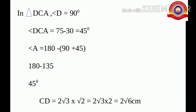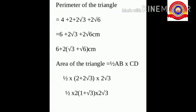Since two angles of triangle DCA are equal, the sides opposite to these angles are also equal. Since CD is equal to 2 root 3 centimeters, AD is also equal to 2 root 3 centimeters. Therefore, AC is equal to 2 root 3 into root 2, which is equal to 2 root 6 centimeters.